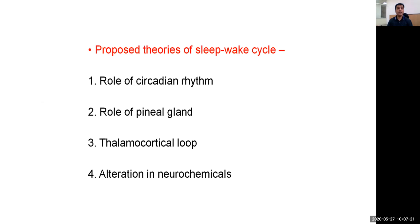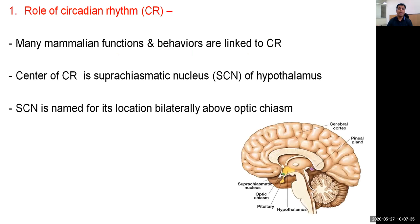Depending on this, various proposed theories of the sleep-wake cycle include: the role of circadian rhythm, role of the pineal gland, thalamocortical loop, and alteration in neurotransmitters. Regarding the role of circadian rhythm: many mammalian functions and behaviors are linked to circadian rhythm. The center for this circadian rhythm in humans is the suprachiasmatic nucleus, located in the hypothalamus above the optic chiasm.